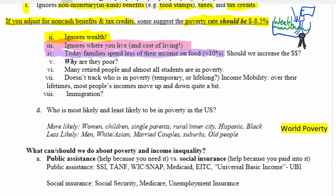Another problem with measuring poverty is that we ignore why people are poor. Some people are poor because they're retired with low income but may have substantial wealth — they've paid off their house and cars and don't need to make money, yet their household is counted as in poverty. Almost all students will be counted in poverty because they live in a household with low income. Retired people and students are probably not the groups we should be most concerned about when talking about poverty.